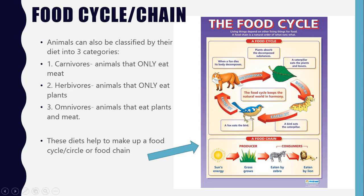The tree grows, the leaves come out, they get eaten by the caterpillars, the caterpillars get eaten by the birds, the bird gets eaten by the fox, and when the fox dies its body decomposes into the soil, which feeds the plant. Here we also have a food chain where the sun helps the grass grow, the zebra eats the grass, and then the zebra gets eaten by the lion because lions are predators and carnivores. The zebra is a herbivore and is often prey, while the predators are carnivores.